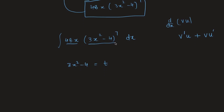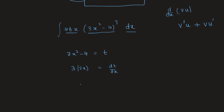If t = 3x² - 4, then differentiating with respect to x gives dt/dx = 6x, which means we can write 6x dx = dt. This allows us to replace all x-terms with t.